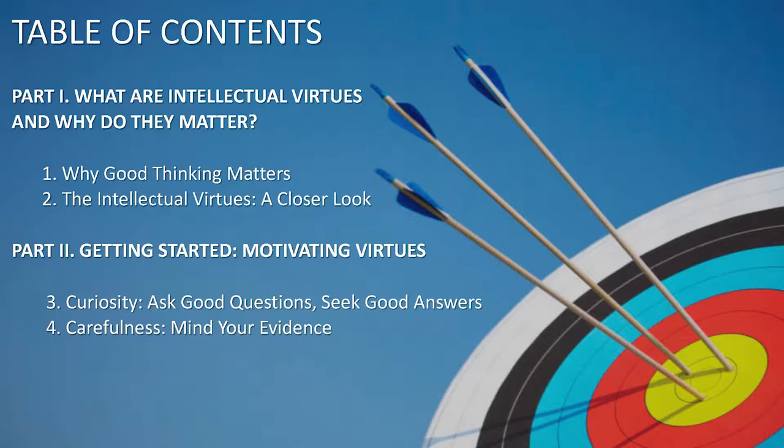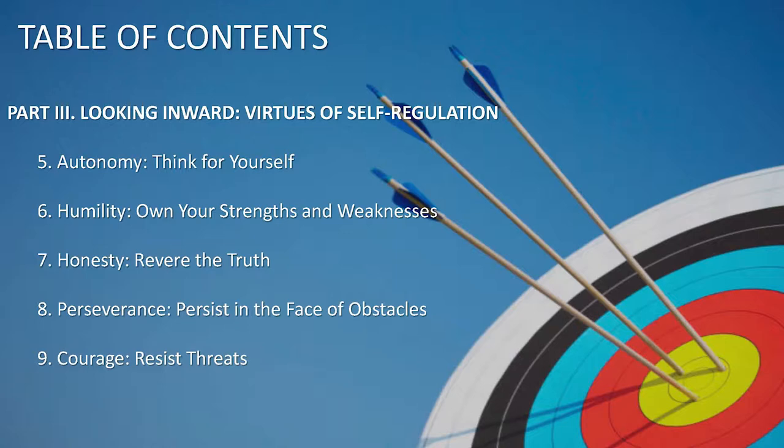From there, the next nine chapters are about individual virtues. Starting with motivating virtues like curiosity and carefulness — curiosity is the virtue that impels us toward truth and knowledge, whereas carefulness repels falsehood and irrationality. From there we move inward. This taxonomy is more pedagogical than one that tries to carve these virtues at their theoretical joints. Some virtues are important for self-regulation: autonomy, humility, honesty, perseverance, and courage — please take 'intellectual' in front of all those as read.